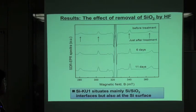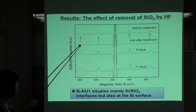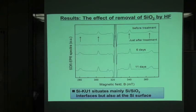We concluded that SI-KU1 exists mainly at the Si-SiO2 interface. And moreover, the KU1 signal intensity can also be observed at the HF treatment sample. So, KU1 can also exist at the silicon surface.